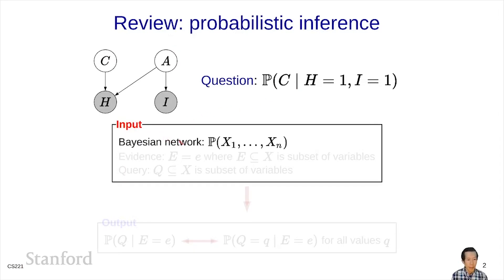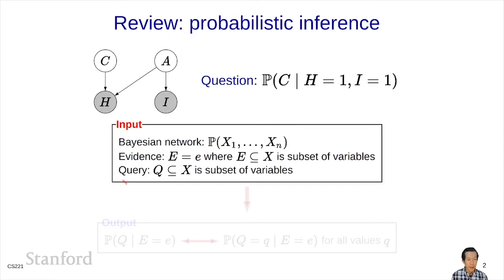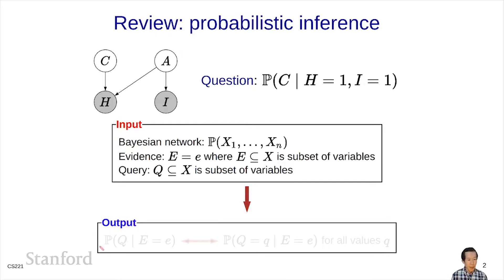Generally, in a Bayesian network, some of the variables you observe as evidence — for example, h and i in this case — and another set of variables you are interested in are the query variables, so q would be c here. What we want to produce is the probability of the query variables conditioned on the evidence. Formally, this is the probability of Q equals q for each of the values of little q.